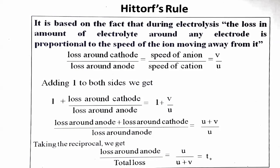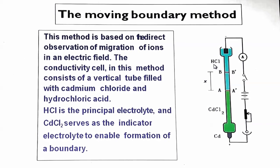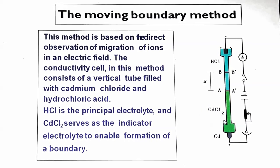The moving boundary method is based on direct observation of the migration of ions in an electric field. In this method, we take a vertical vessel tube filled with hydrochloric acid and cadmium chloride. HCl acts as the principal electrolyte, because we have to observe the transference number of hydrogen ions, while cadmium chloride acts as the indicator electrolyte, enabling the formation of a boundary.